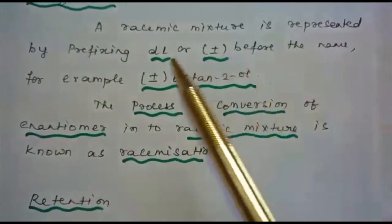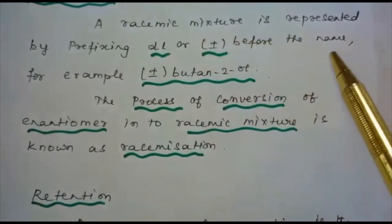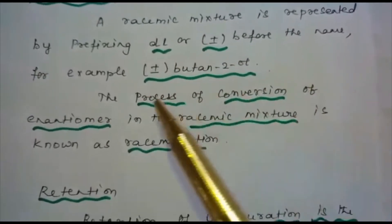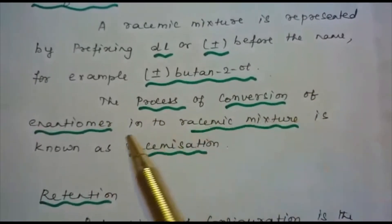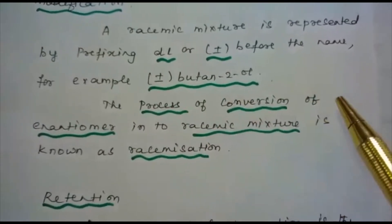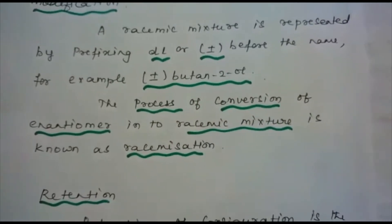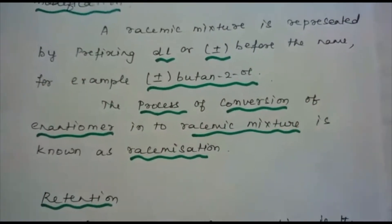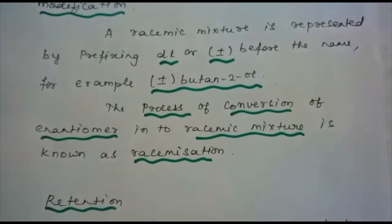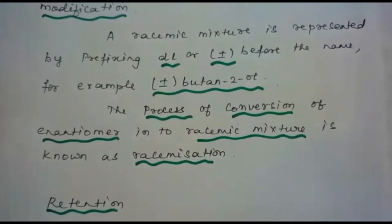A racemic mixture is represented by prefixing DL or plus-or-minus before the name — for example, (±)-butane-2-ol. The process of conversion of an enantiomer into a racemic mixture is called racemization. Enantiomers are mirror images that are non-superimposable in nature, and racemization is the process by which an enantiomer is converted into a racemic mixture.